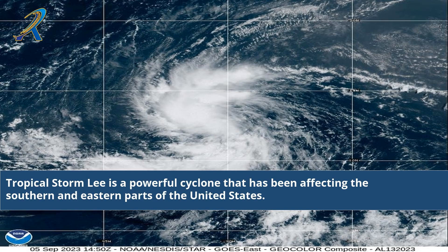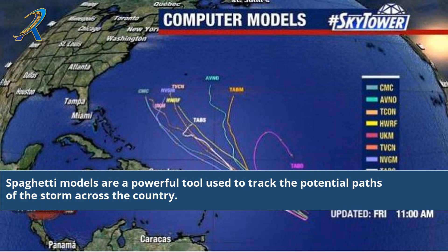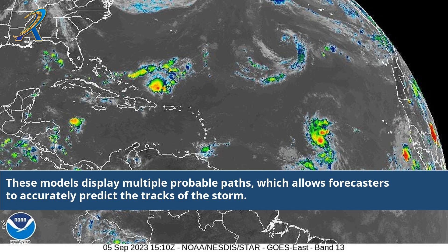Tropical Storm Lee is a powerful cyclone that has been affecting the southern and eastern parts of the United States. Spaghetti models are a powerful tool used to track the potential paths of the storm across the country. These models display multiple probable paths, which allows forecasters to accurately predict the tracks of the storm.